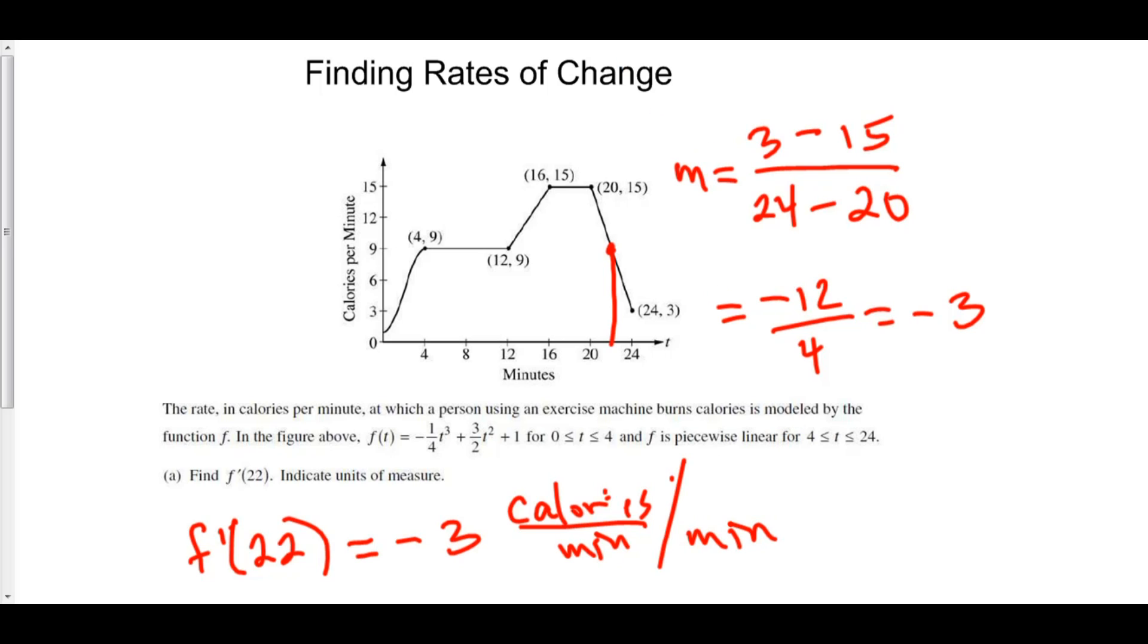Or, in other words, if you were to divide this out, minute turns into multiplied by one over minute. And we get calories per minute squared. And so, we have negative three calories per minute squared. And here's the answer right here.